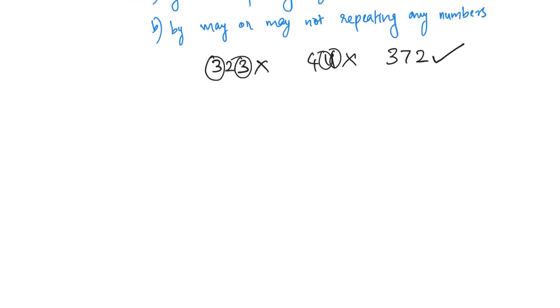The second question is by may or may not repeating any numbers. How do we do that? I have three digits to fill. In how many ways can I fill each digit? Let me take the first digit, the hundreds digit. Here are 1, 2, 3, 4, 5.